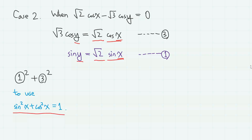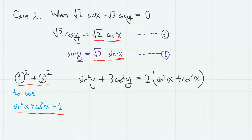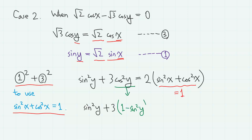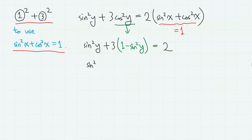From equation 1 squared plus equation 3 squared, we have sine squared y plus 3 cosine squared y equals 2 sine squared x plus 2 cosine squared x. Since sine squared x plus cosine squared x equals 1, the right-hand side is 2. Substituting cosine squared y with 1 minus sine squared y on the left side, we get sine squared y plus 3 minus 3 sine squared y equals 2, which simplifies to sine squared y equals one half.